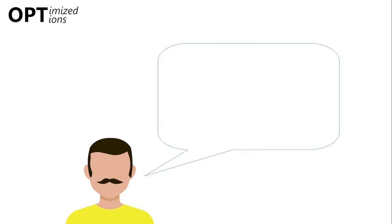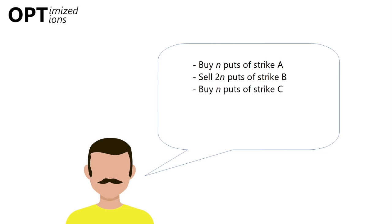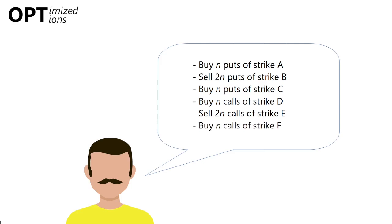To set up the strategy, we buy 1000 puts with strike A, then sell 2000 puts with strike B, then buy 1000 puts with strike C. This is the first half of the strategy. For the calls, we buy 1000 with strike D, sell 2000 calls with strike E, and finally buy 1000 with strike F. To be more general, the number of options on short legs is twice as many as on long legs. In the end, we will have the same number of bought options and sold options.